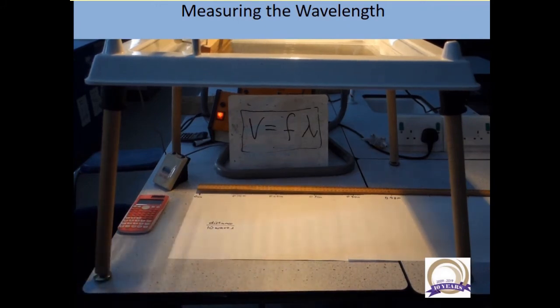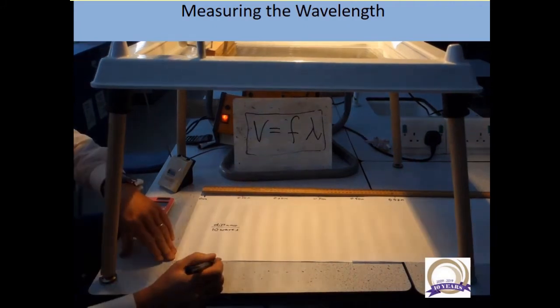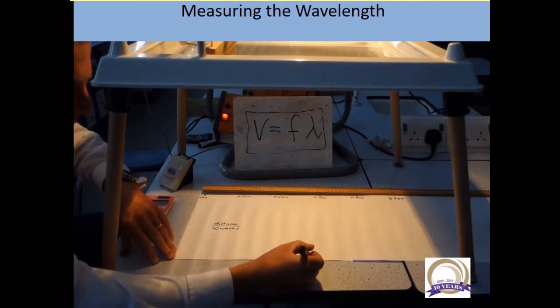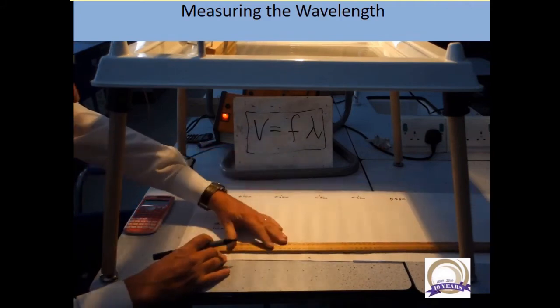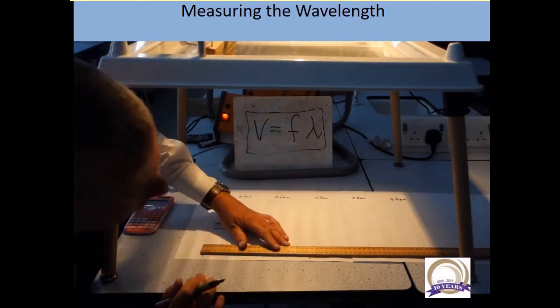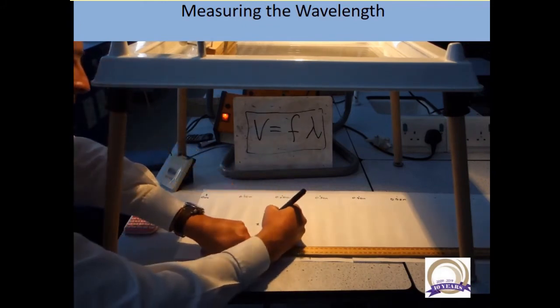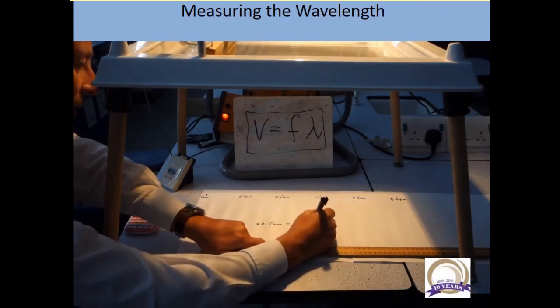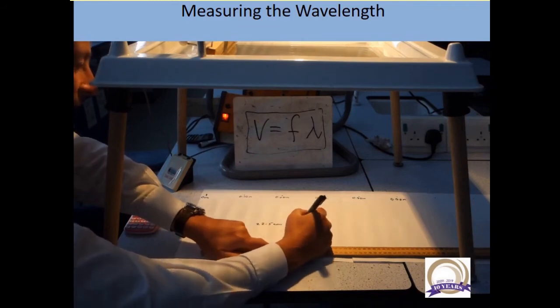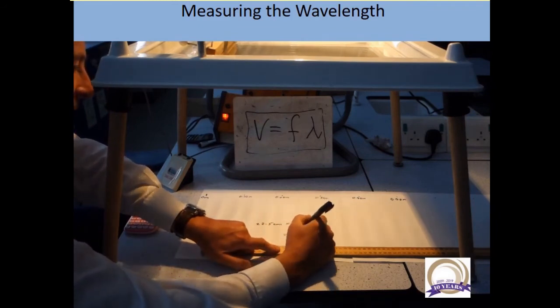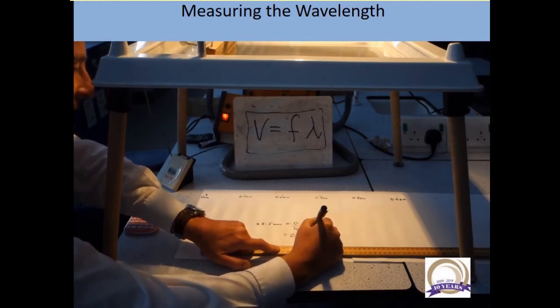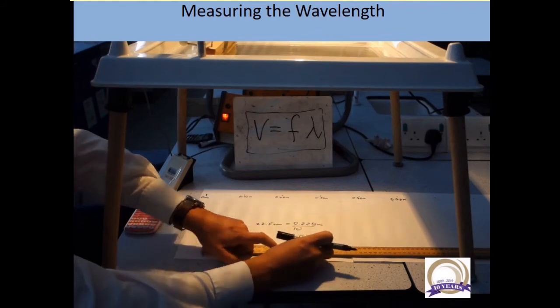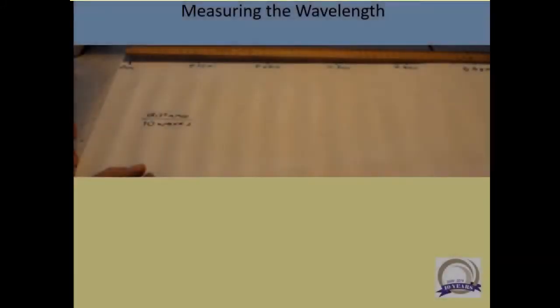Just going to take a photo and then on the PowerPoint later I can mark it a bit more accurately than I'm doing now. Okay, so 10 waves in 22.5 centimeters. Put that into meters: 0.225 meters divided by 10 equals 0.025 meters, which is 2.5 centimeters. Seems about right.